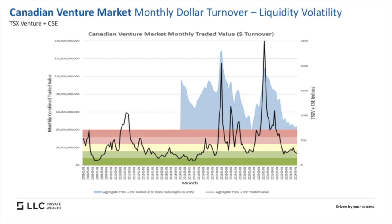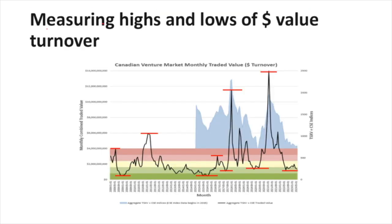Each bar represents about $800 million a month in turnover. The first two green bars represent $1.6 billion, and the top of the red line is $4 billion a month in monthly turnover. We're going to look at what these declines represented and how long it took for them to recover. I've outlined peaks and troughs as best I can — you can certainly quibble and add more highs and lows, but generally speaking the information is about the same.